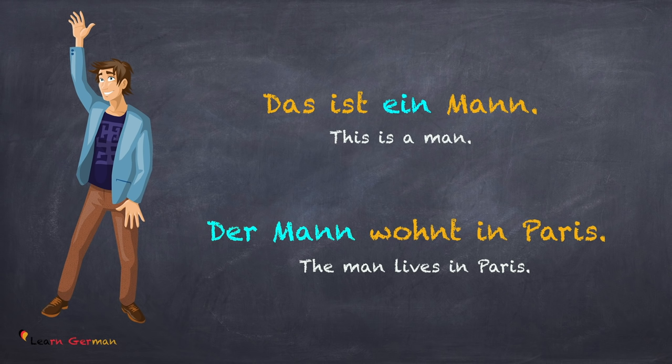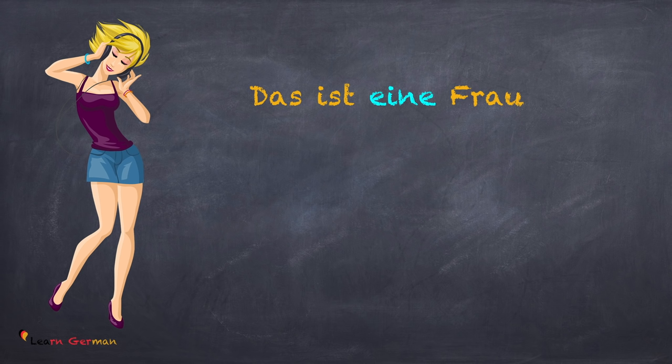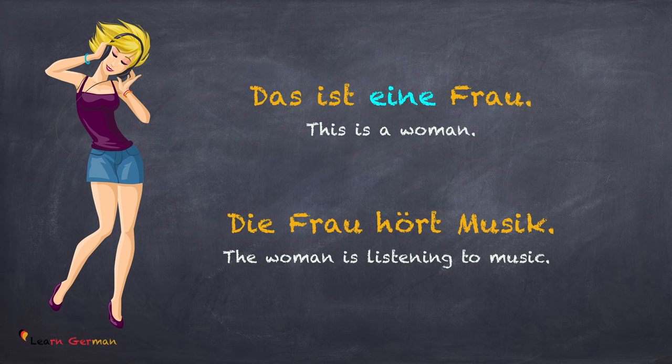Here you have to remember: when the bestimmte article is 'der', then you use 'ein' as the unbestimmte article. Das ist eine Frau. Die Frau hört Musik. Wenn der bestimmte Artikel ist 'die', der unbestimmte Artikel ist 'eine'.